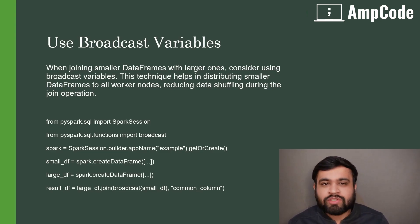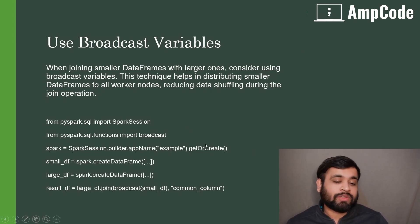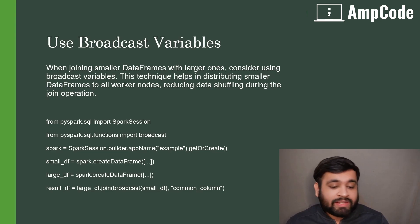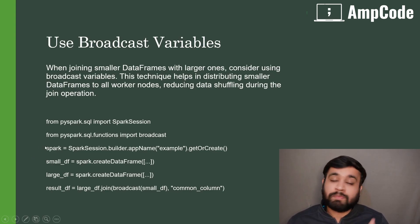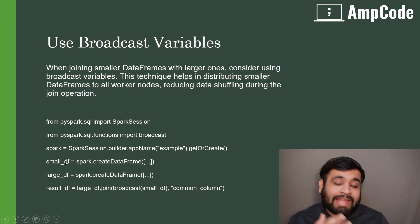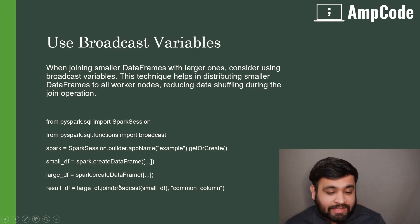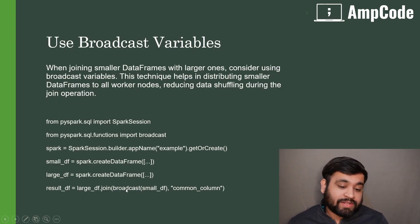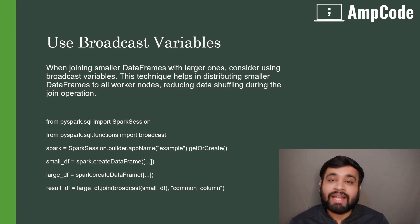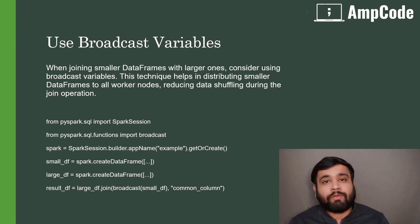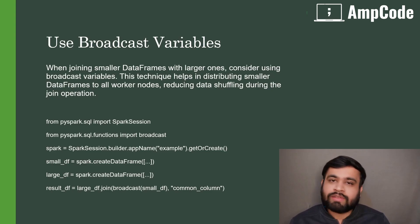Here is a simple code snippet showing how to use a broadcast join. Once we import the required modules, we create a SparkSession. We have a smaller_df and a large_df, and we use the join operation with the broadcast function, passing the small DataFrame, which distributes it across all worker nodes and drastically improves the performance of your execution. This is how easily you can use broadcast variables with DataFrames.